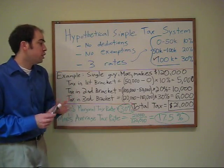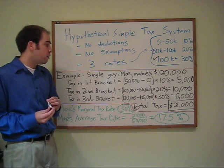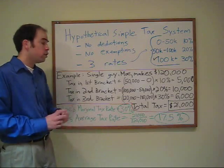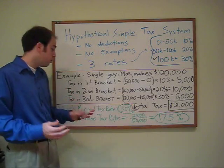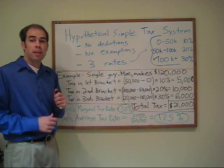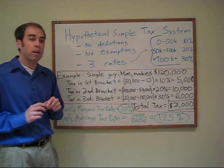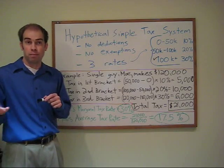Overall, this explains the difference between marginal tax rates and average tax rates. The average tax rate is your total tax divided by your total income. The marginal tax rate is how much of an additional dollar that you make would be taxed by government.